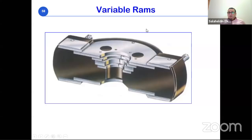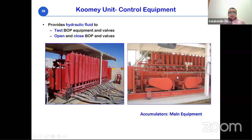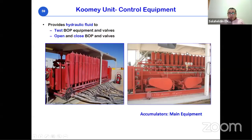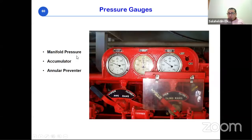The accumulator unit — or koomey unit — is the hydraulic control system for the BOP. It stores hydraulic fluid in pressurized cylinders at approximately 3,000 psi and is connected to every valve and component of the BOP via hydraulic lines. The unit contains multiple gauges to display manifold pressure, accumulator pressure, and annular pressure, along with four-way valves for controlling different positions of each BOP component.